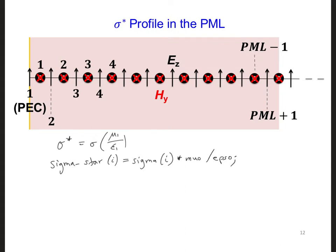However, let's look at the grid. The Hy's are offset by one half of a grid cell compared to the location of the Ez's. As a result, if we have this polynomial grading, we need to use different sigma values because we're sampling this curve at a different location for each component in our grid.